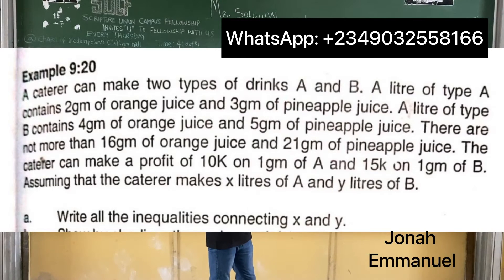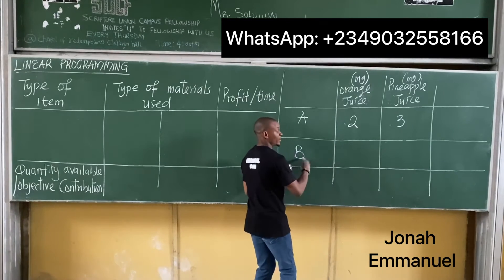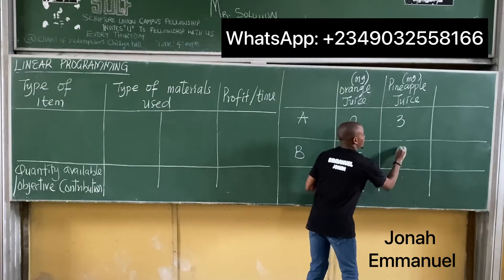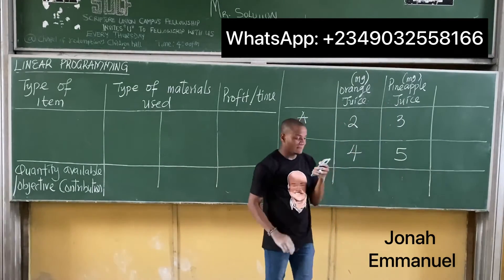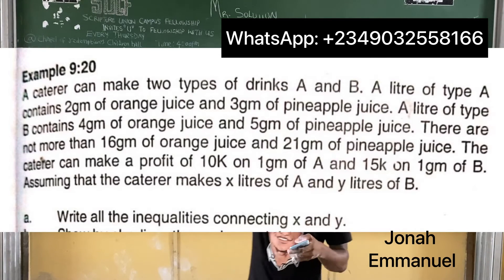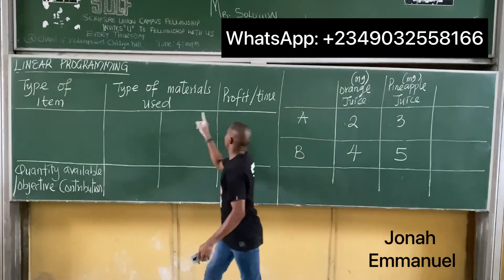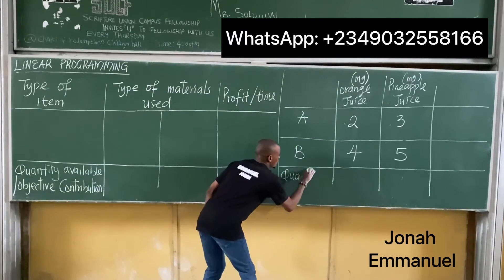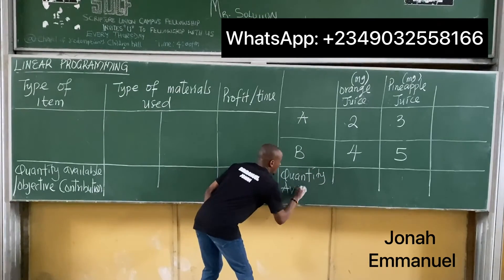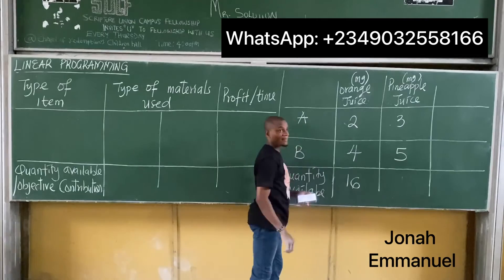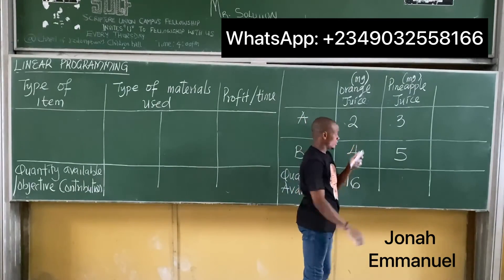A liter of type B contains four milligrams of orange juice and five milligrams of pineapple juice. There are not more than — check your question — for quantity available: 16 milligrams of orange juice and 21 milligrams of pineapple juice.